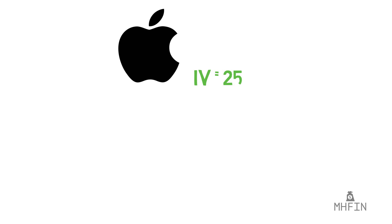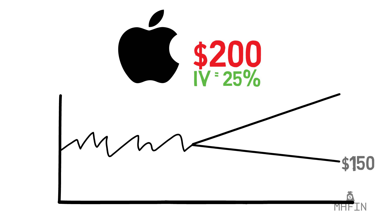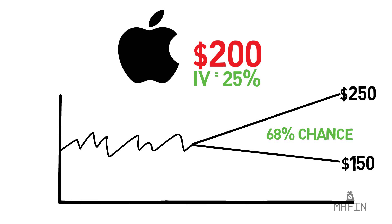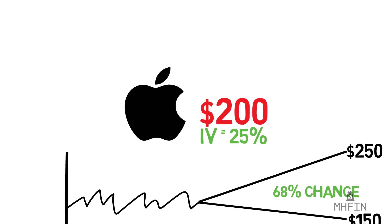What it represents is the annualized expected one standard deviation range for the stock based on the options prices. An IV of 25% on Apple stock priced at $200 would represent a one standard deviation range of $50 over the next year. One standard deviation represents around 68% of outcomes, meaning there is approximately a 68% chance that Apple stock will settle between $150 and $250 one year from now. As you can tell from the graphic, IV will not help a trader determine direction — it simply acts as a measure of uncertainty.